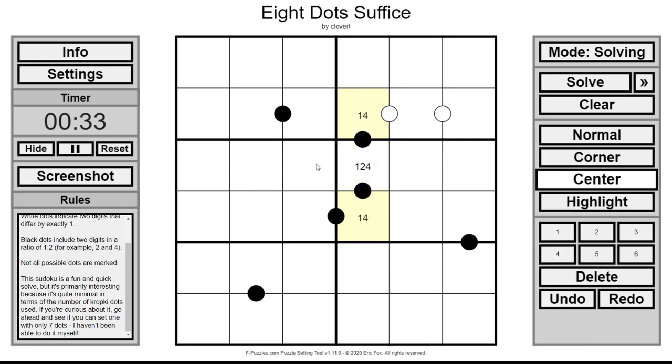And I think this middle piece has to be a two because if it was a one then it would force a two there and there.